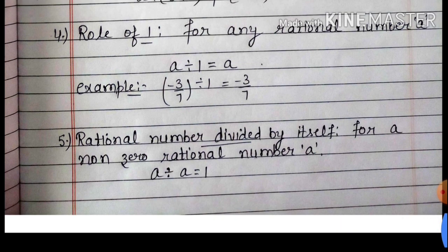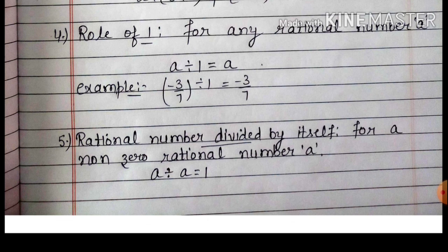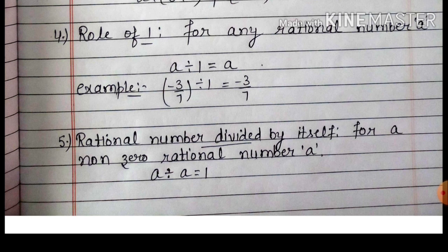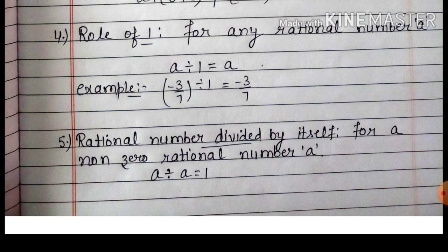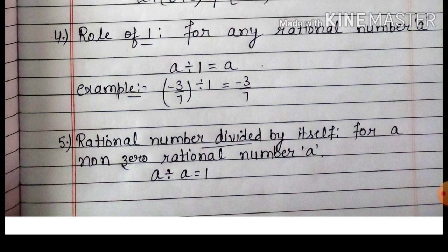Rational number divided by itself: for any non-zero rational number A, A divide by A equals to 1. अगर किसी rational number को उसी rational number से divide करेंगे, तो वह 1 के equal आएगा. Example: 2 by 3 divide 2 by 3 — तो उनका answer आएगा 1.